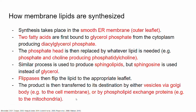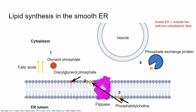Let me show you how this whole process works visually. In the cytoplasm we have fatty acids and glycerol phosphate; these two bind to each other making diacylglycerol phosphate, which becomes part of the smooth ER membrane. The phosphate head is then replaced by whatever the cell needs — for example, phosphatidylcholine: the phosphate head is replaced with phosphate and choline. If the cell needs inositol, then phosphate and inositol are used. If it needs a sphingolipid, sphingosine replaces the glycerol.